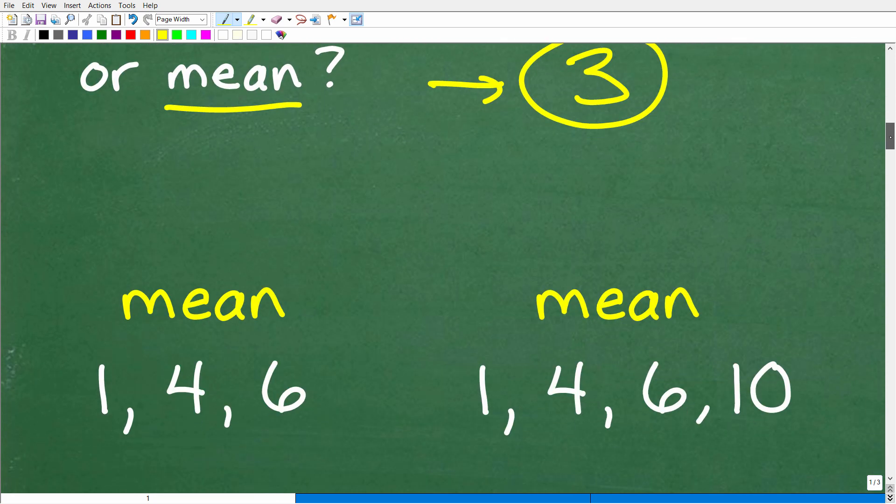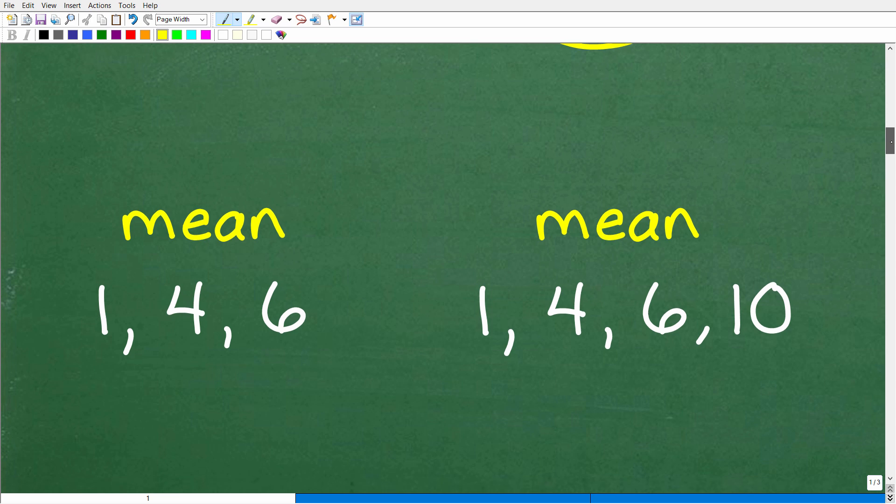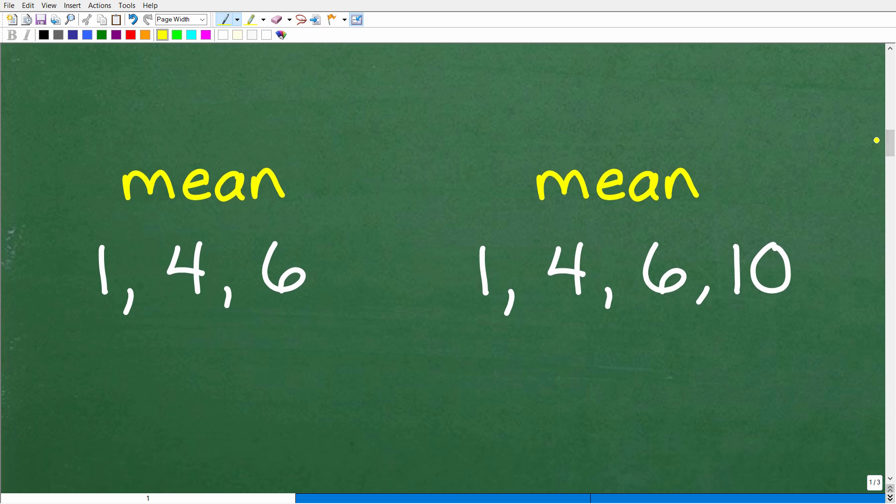Alright, now, these words are often confused. Now, here is a little pop quiz for you. So we have the mean. Let's talk about the mean. So we have some data here, some information. So we have 1, 4, 6, and then over here we have 1, 4, 6, and 10. So how do we calculate the mean of these numbers? As a matter of fact, if you want to go ahead and do this real quick, that is fantastic. Because I want to see if, indeed, you know the difference between the mean and median.